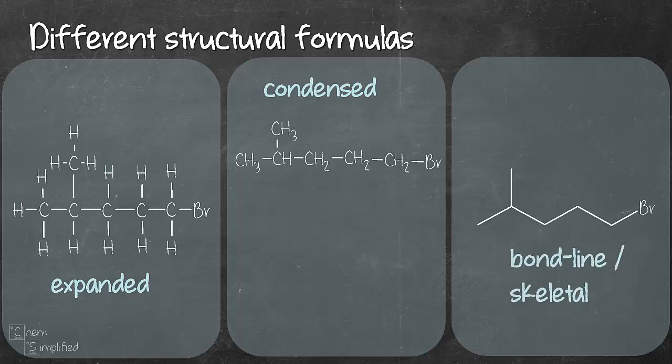Lastly is the bond line or the skeletal structural formula. In this form, it's basically what the name says, skeletal. It doesn't show the atoms for carbons and hydrogens. It only shows the bonds connecting them and if there are other atoms in the molecule like bromine in our example, then it will be written out.